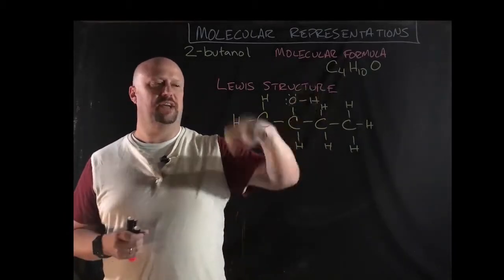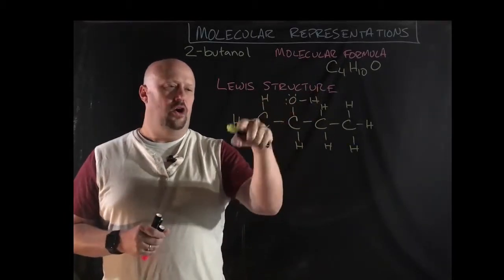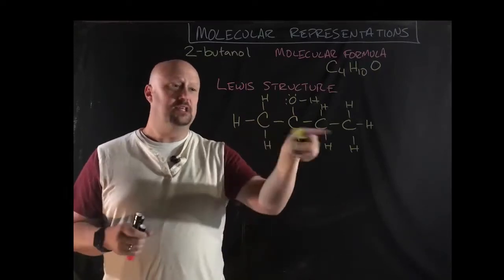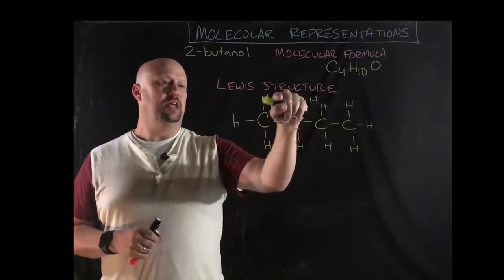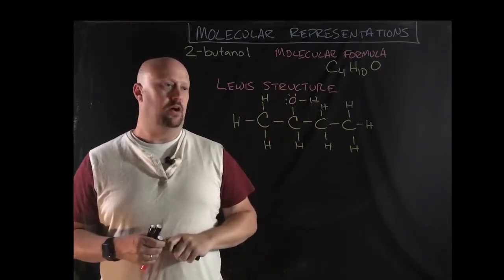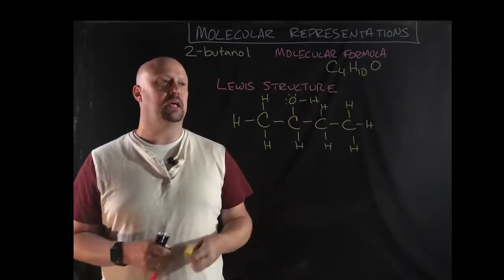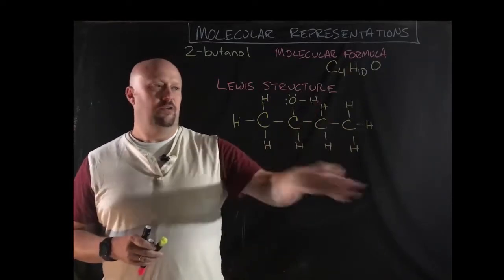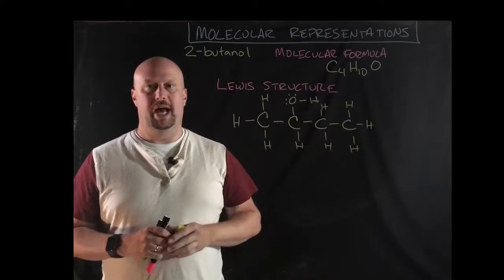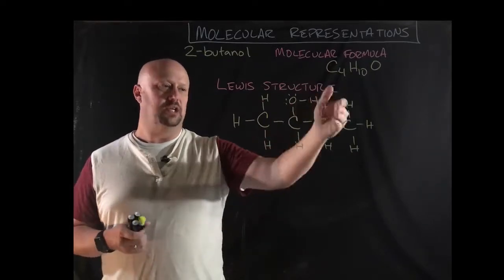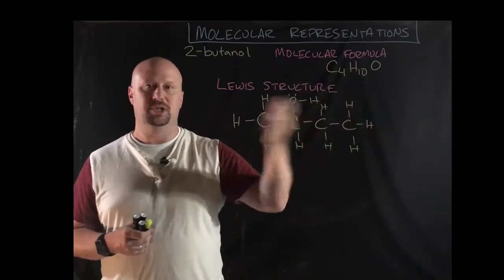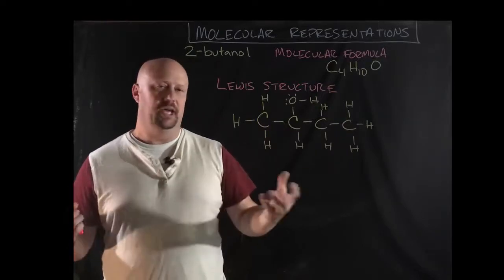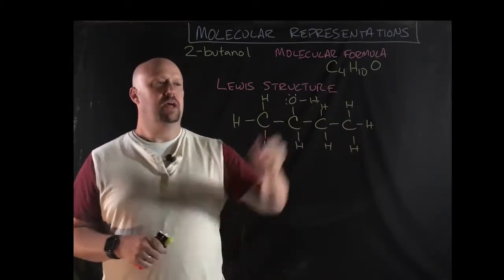So this would be the correct Lewis structure. I've accounted for all the electrons, all the electrons in the carbons and the hydrogens are all bound up in the bonds, and then we've got a couple of lone pairs there on the oxygen. So that's the complete Lewis structure for this 2-butanol atom. It's not the only way that I could have drawn it. I actually could have drawn the oxygen over here. It depends on which side you're counting the two from.